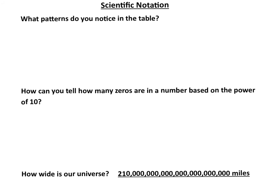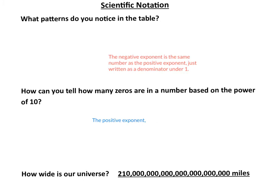Now we're asked to reflect on what we saw in the table. The first pattern you should have noticed is that the negative exponent is the same number as the positive exponent, just written as a denominator under 1. The second thing: how could you tell how many zeros are going to be in the number based on the power of 10? For the positive exponent, it tells you how many zeros follow the 1. For the negative exponent, you subtract 1 for how many zeros are between the decimal and 1.